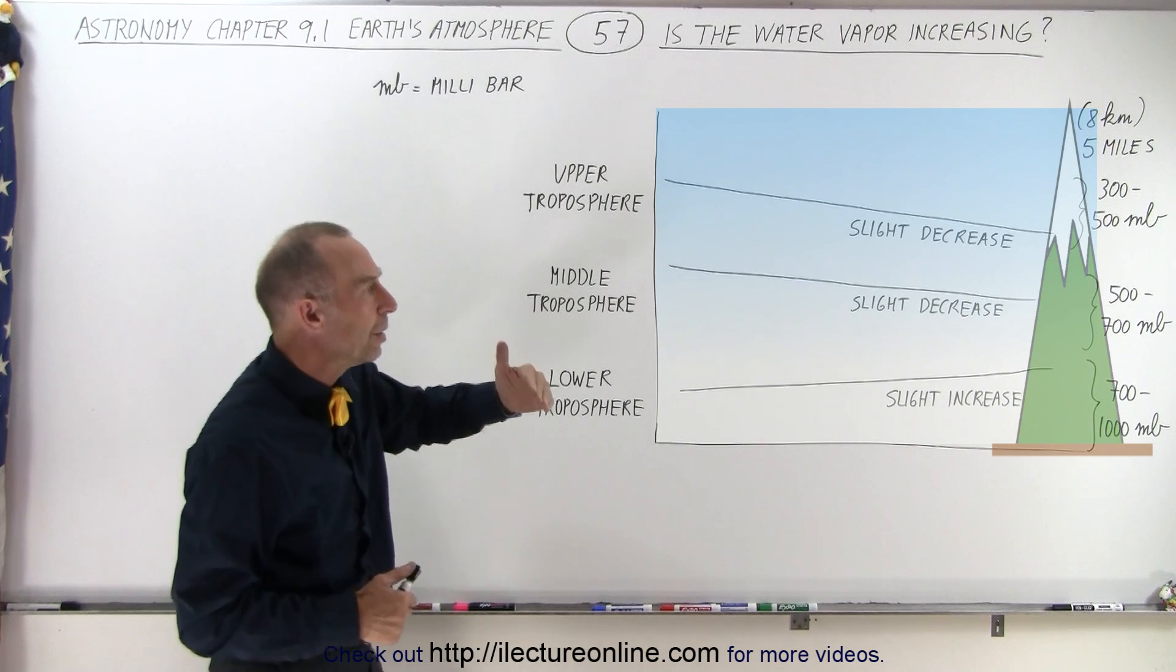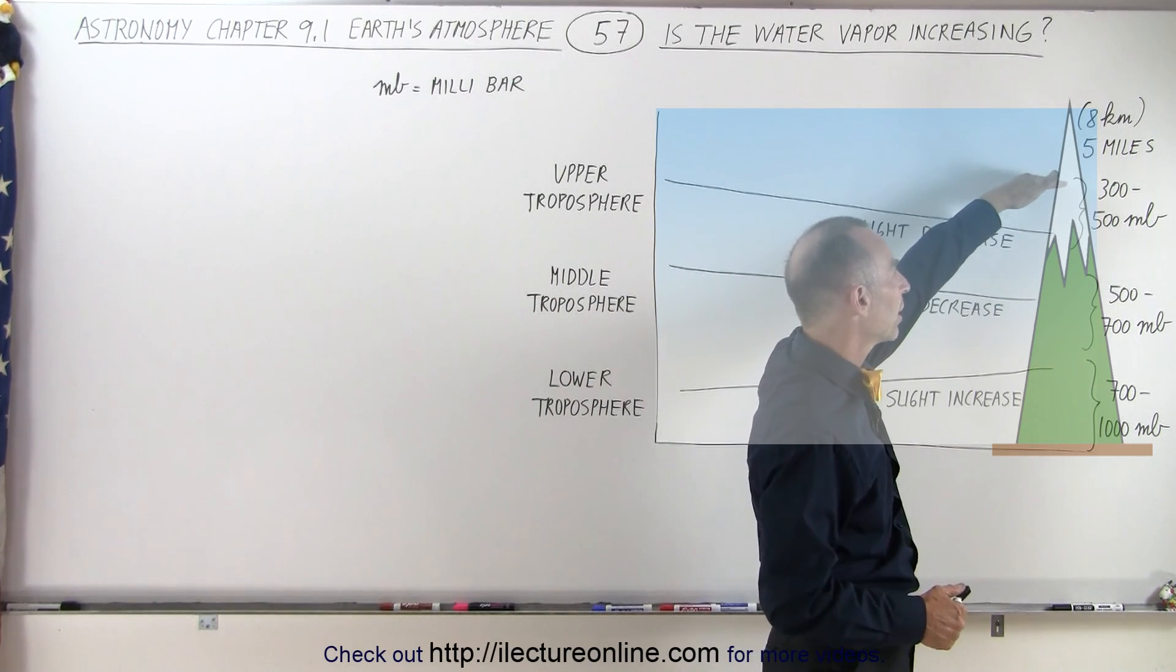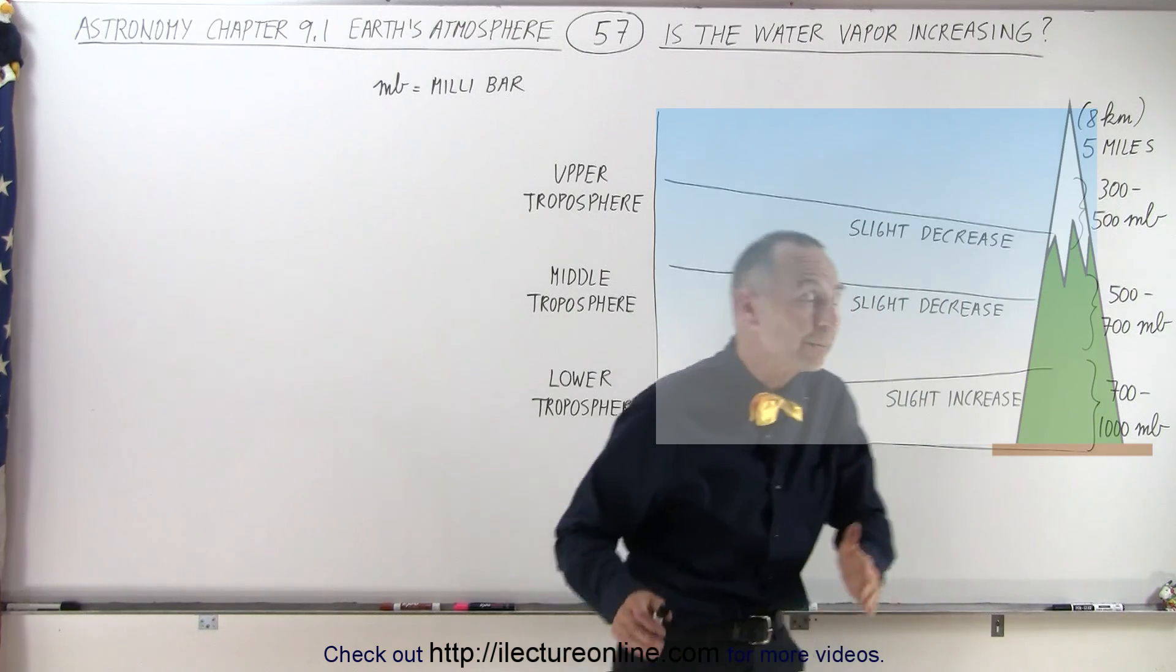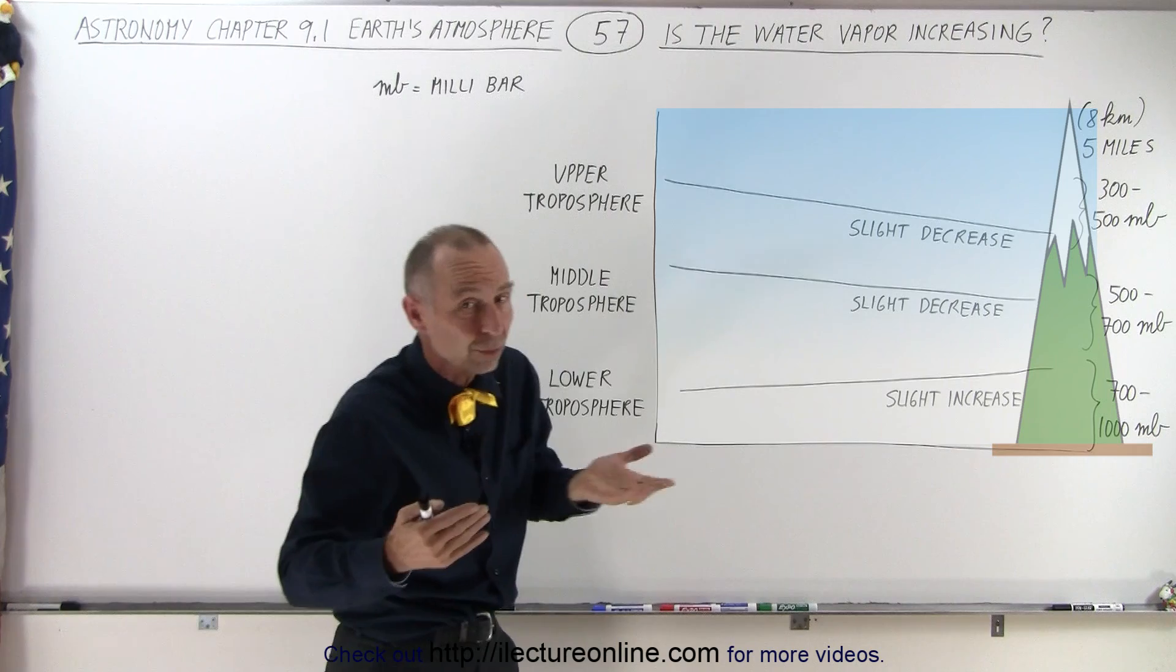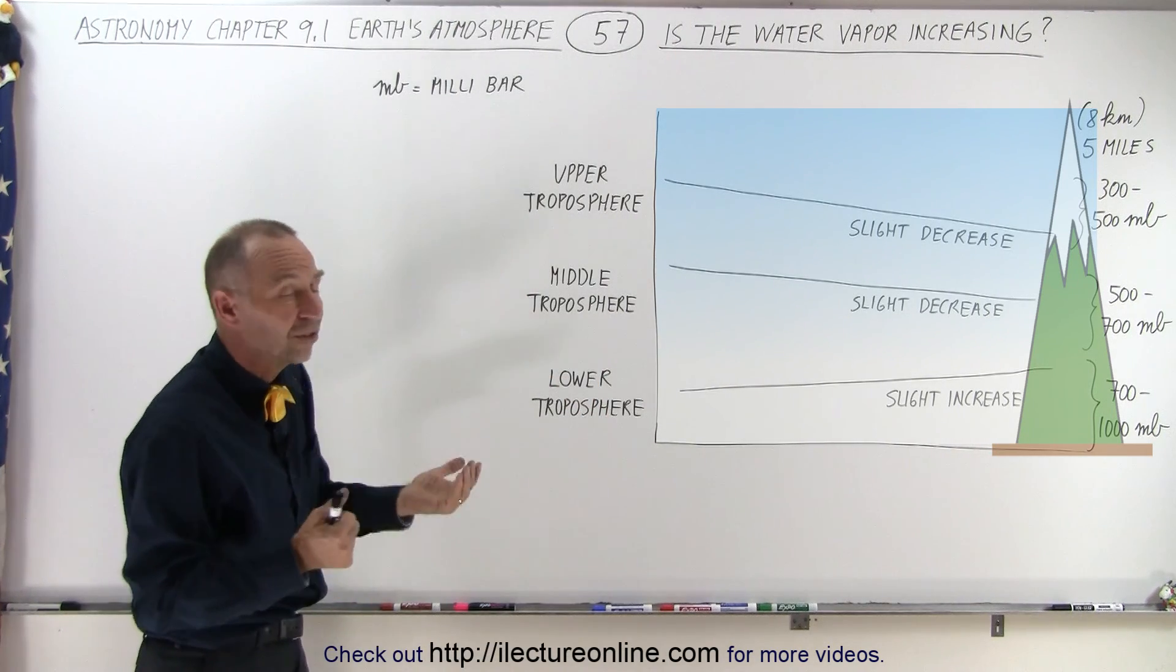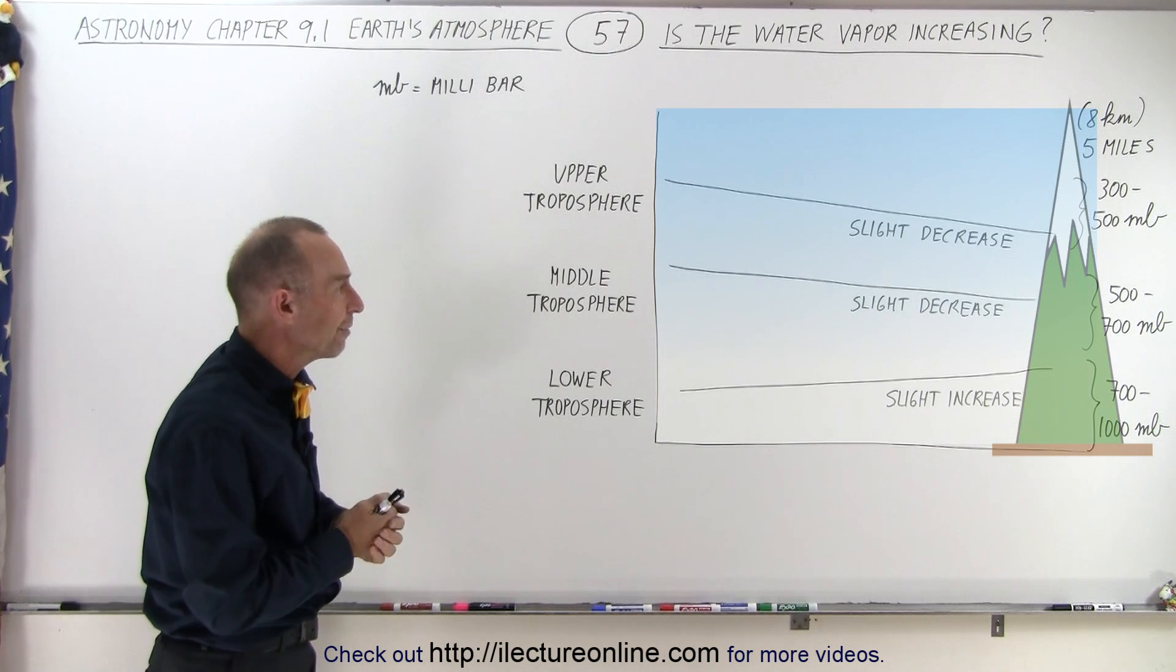And as we continue to go up to a region where the atmospheric pressure is somewhere between 300 and 500 millibar, now we're at a height of about 5 miles or 8 kilometers, which is pretty close to the top of Mount Everest, again we see a slight decrease in the atmospheric water vapor.